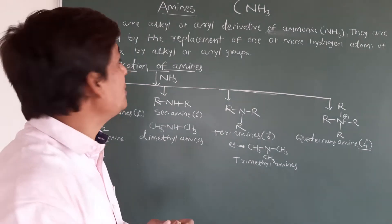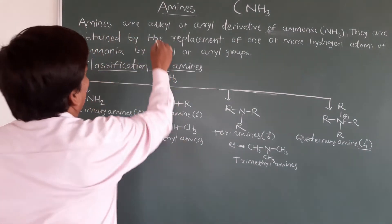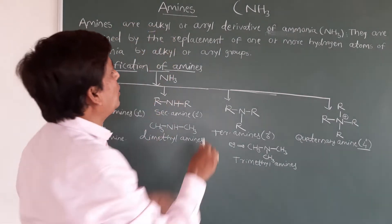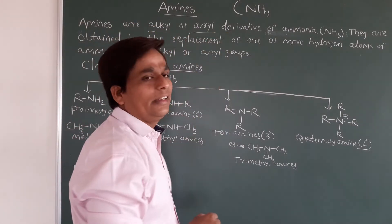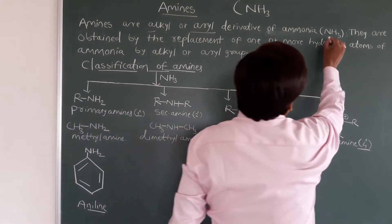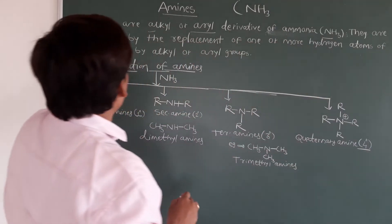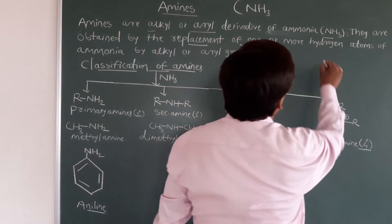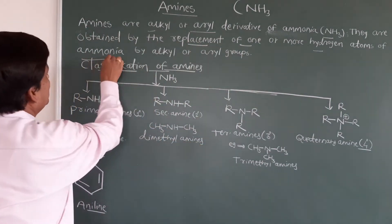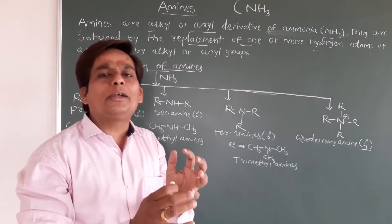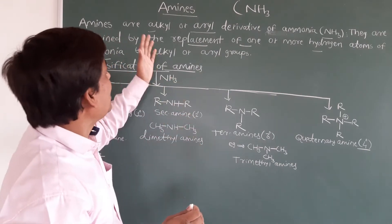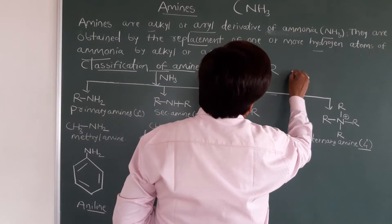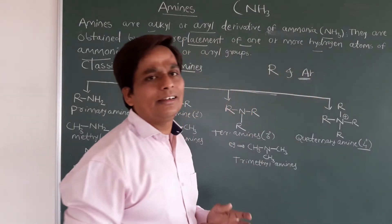See the definition of amines: amines are alkyl or aryl derivatives of ammonia (NH3). Aryl means benzene ring. They are obtained by the replacement of one or more hydrogen atoms of ammonia by an alkyl or aryl group. Alkyl groups are represented by R, and aryl groups by Ar — these are aromatic compounds.